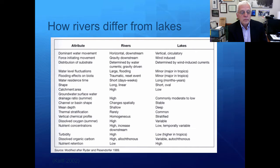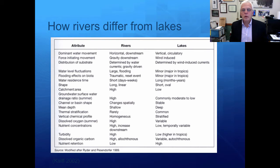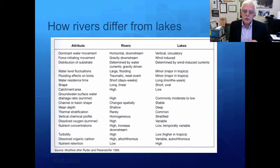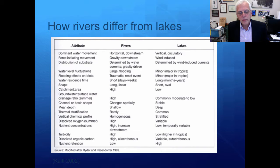The mean depth is often shallow in rivers and often quite deep in lakes. Thermal stratification is very rare in rivers, so they provide less of a thermal refuge, whereas stratification in lakes is quite common. Vertical chemical profiles in rivers tend to be very homogeneous because of the amount of turbulence and water flow, whereas lakes form into layers with different chemical species and concentrations in different places.